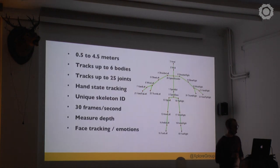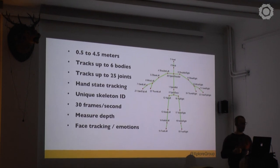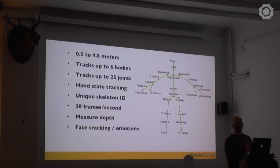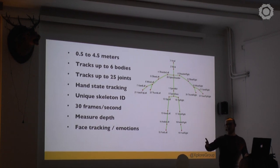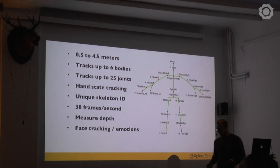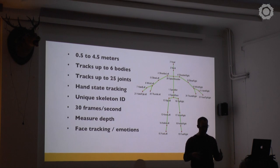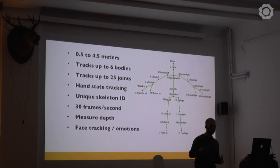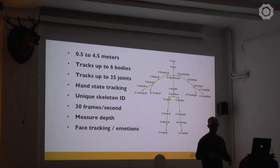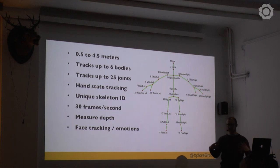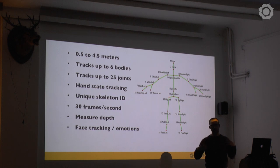The Microsoft Kinect version 2 — not version 1, version 2 — caught my eye the most because it has a lot more features to hook into. For example, it can measure a person's body up to 4.5 meters, and from half a meter it can track up to six bodies. Six people can be in front of the camera and it can distinguish all six of them. It can track up to 25 joints, which is really important.